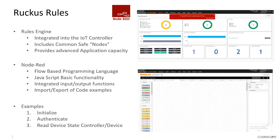We integrate Node-RED into the IoT controller. Node-RED is a flow-based programming language that uses a number of different sub-languages, with most core functionality based on JavaScript. Anybody used to programming in JavaScript can very easily develop complex applications within the flow. It also includes all standard functions needed to communicate in and out of the rules engine, and you have the ability to import and export code between servers.